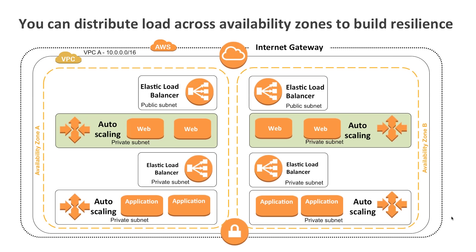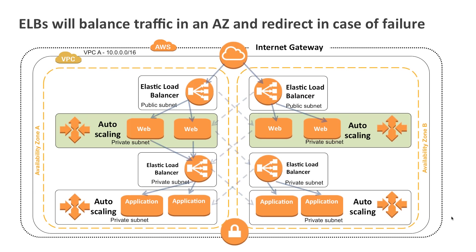We built all of that within a single availability zone. The internet gateway, the virtual private gateway — all of these services are resilient regional services. But you choose how to deploy your solutions and applications across those availability zones. The Amazon Elastic Load Balancer is a great tool to help you do that. It can take traffic and distribute it across any number of backend instances. You can have load balancers on the public side talking to the internet, and you can also deploy elastic load balancers privately within your VPC — for example, to balance traffic between your web tiers and application tiers.